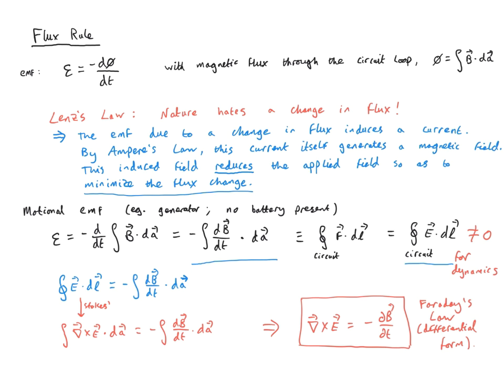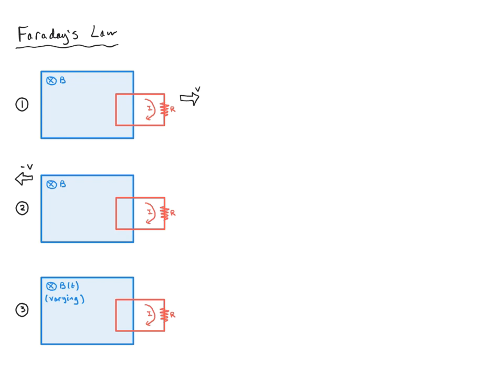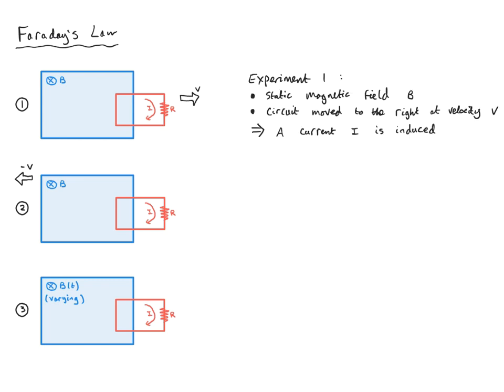Faraday discovered this law through three different experiments. In experiment one, he considered a static magnetic field with a wire loop circuit dragged to the right at velocity V. What was observed experimentally is that a current is induced in the circuit — the result we rationalize via the concept of the electromotive force.